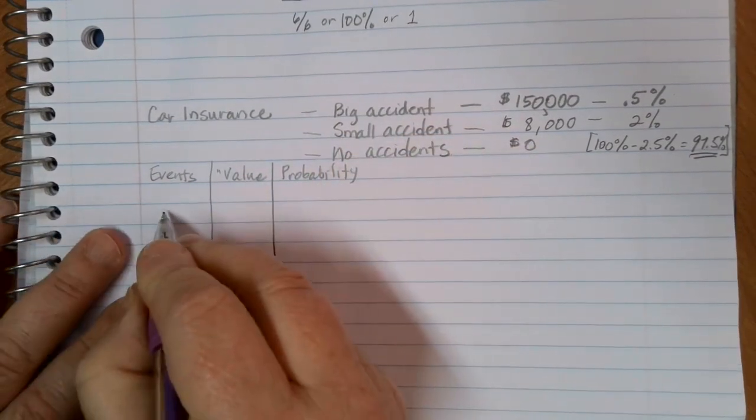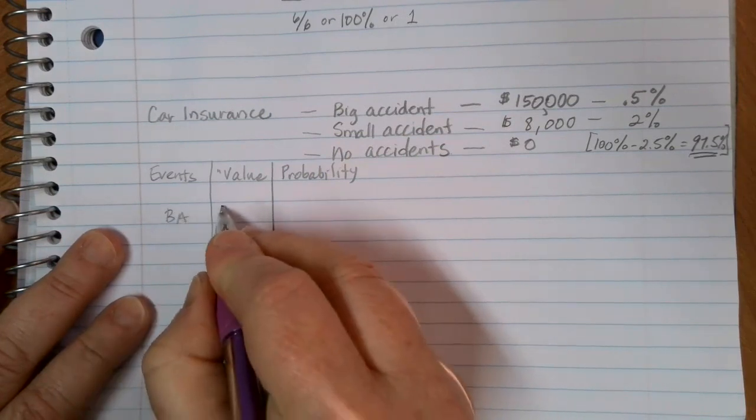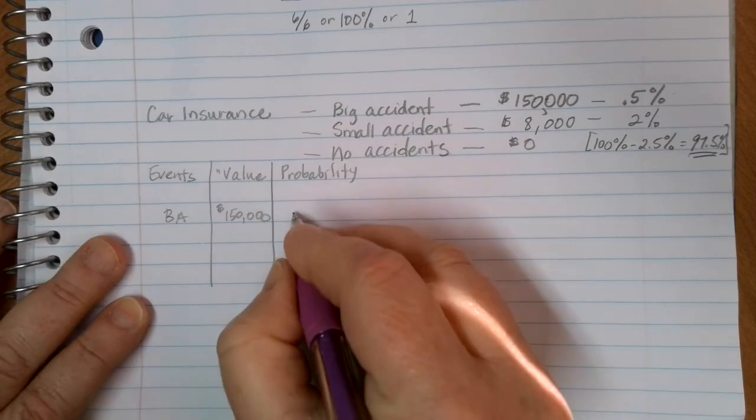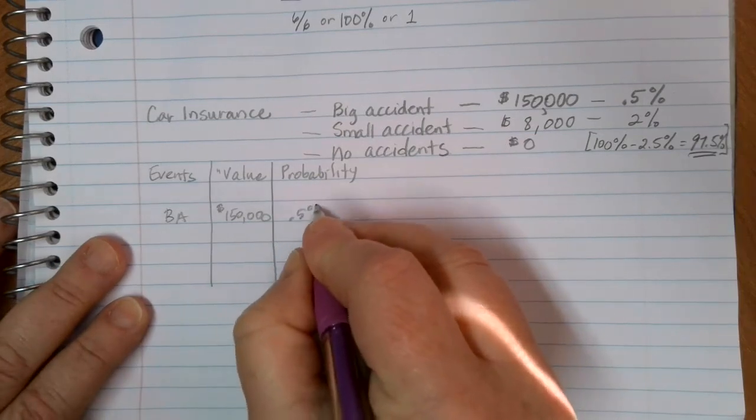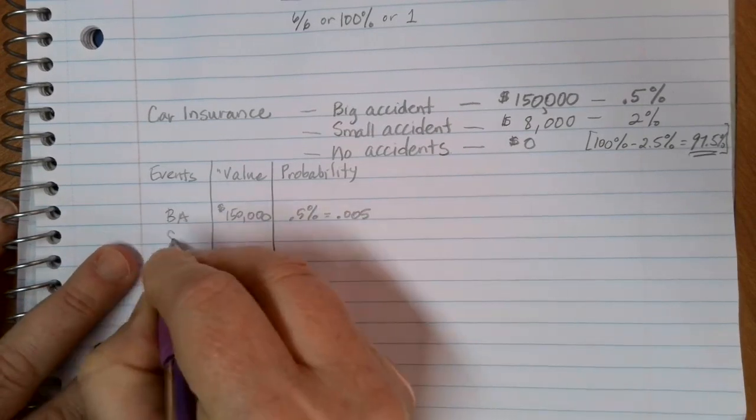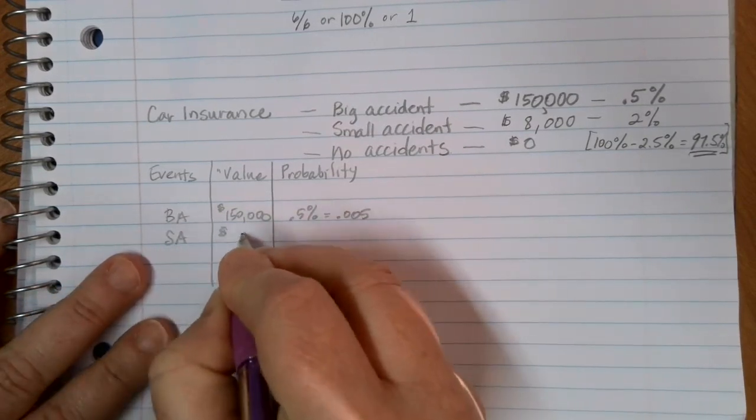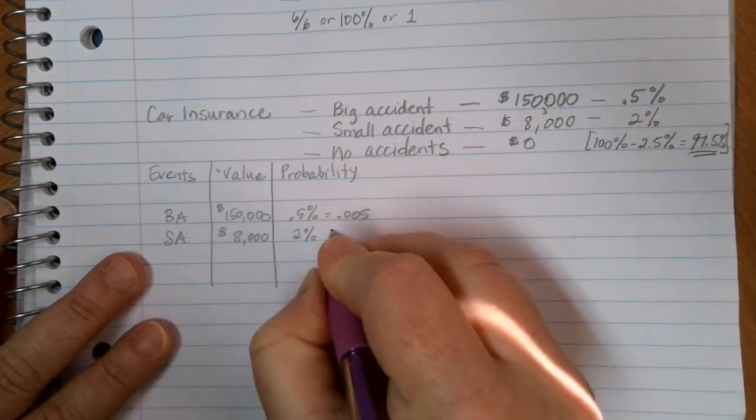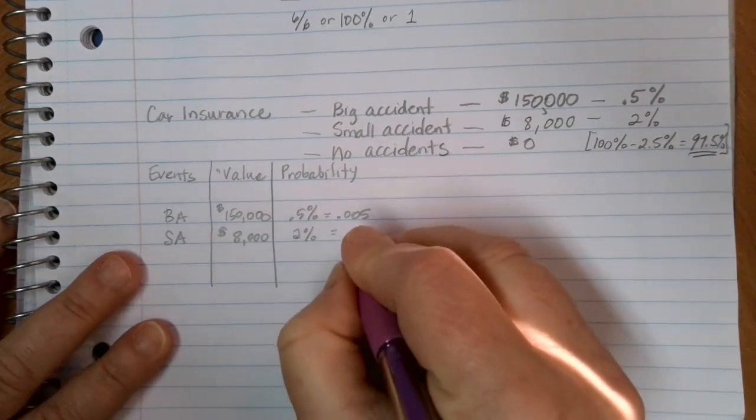In this case, I have big accidents with a value of $150,000 and a probability of 0.5% or 0.005. I have small accidents with a value of $8,000 and a 2% chance of that occurring, or 0.02.